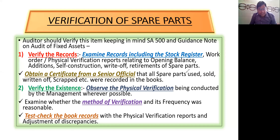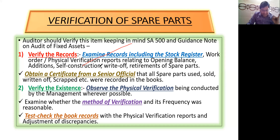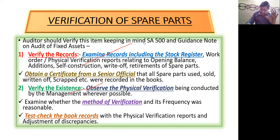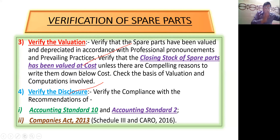Now, verification of spare parts — the same approach applies. First, verify the records related to spare parts. Then verify existence — observe physical verification, check the method of verification, and test-check book records with physical verification reports. Then check valuation — whether closing stock of spare parts has been valued at cost. And finally, disclosure.